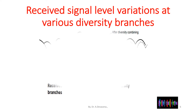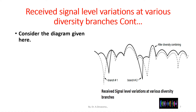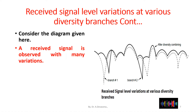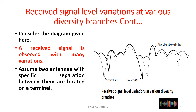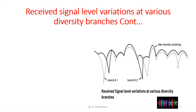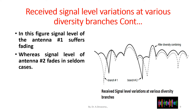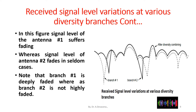Received signal level variations at various diversity branches are shown in this diagram. Consider the diagram given here. A received signal is observed with many variations. Assume two antennas with specific separation between them are located on a terminal. In this figure, signal level of antenna 1 suffers fading, whereas signal level of antenna 2 fades in seldom cases. Note that branch 1 is deeply faded, whereas branch 2 is not highly faded.